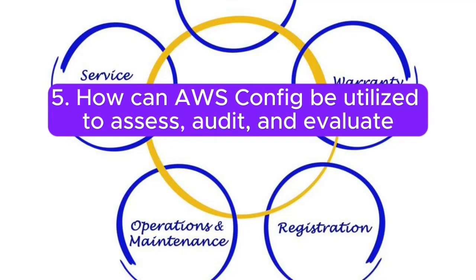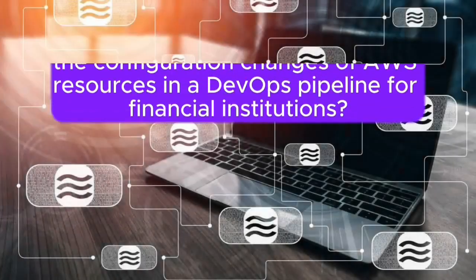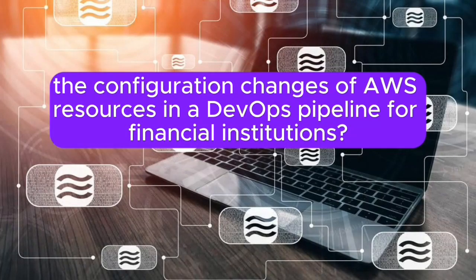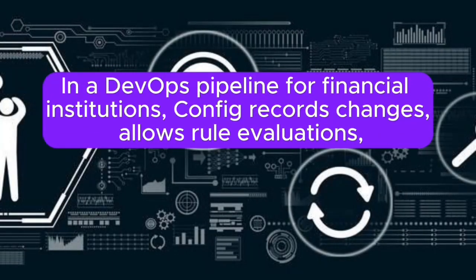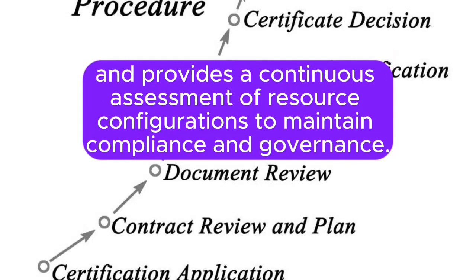Question 5: How can AWS Config be utilized to assess, audit, and evaluate the configuration changes of AWS resources in a DevOps pipeline for financial institutions? Answer: AWS Config enables the assessment and auditing of AWS resource configurations. In a DevOps pipeline for financial institutions, Config records changes, allows rule evaluations, and provides a continuous assessment of resource configurations to maintain compliance and governance.